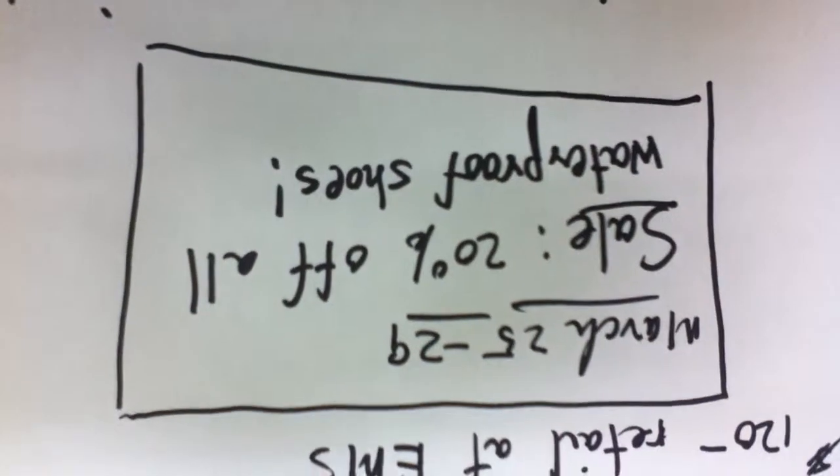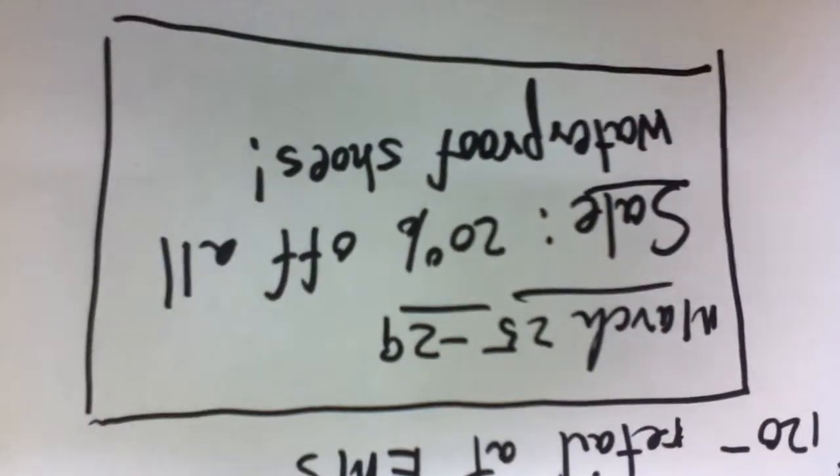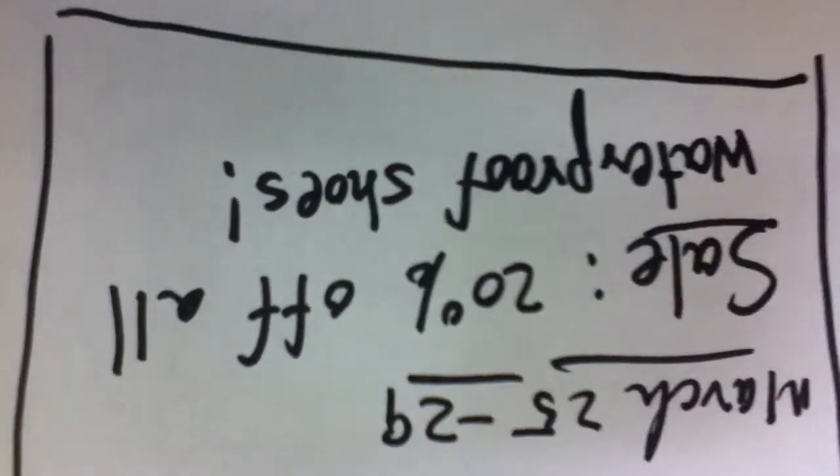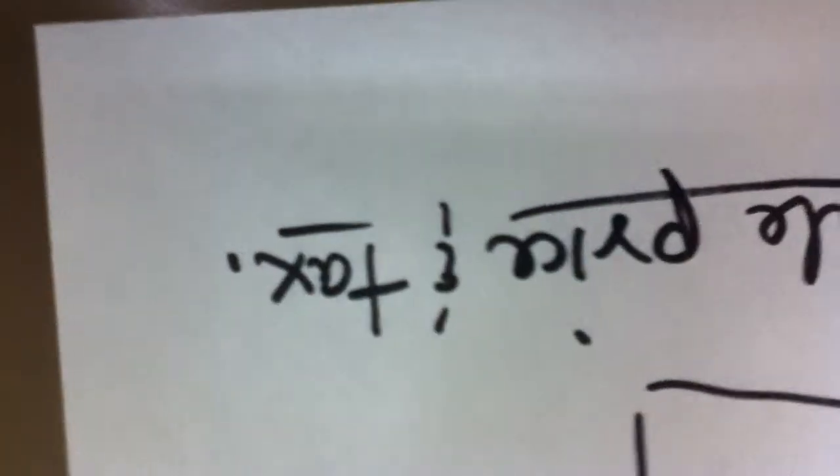From March 25 to 29, this is a sale. 20% off all waterproof shoes. What a deal. What is the sale price and the tax?